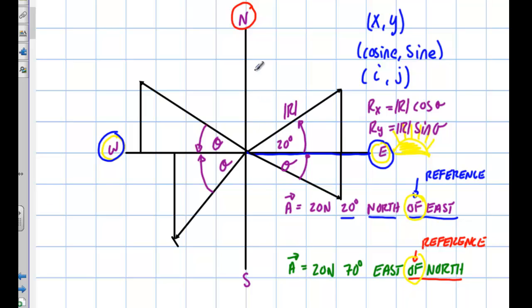There are two exceptions we'll talk about later where we switch cosines and sines — inclined planes and pendulums. In some applications of electricity and magnetism we take it case by case. But as far as vectors are concerned, always drop to the horizontal, and whatever is after 'of' is your reference point. That's basically it. Thanks for watching and I'll talk to you soon.